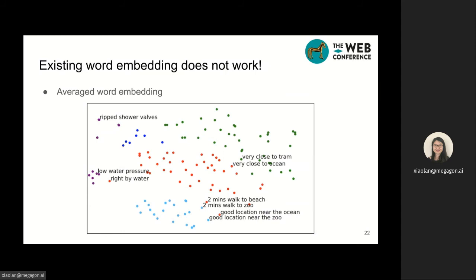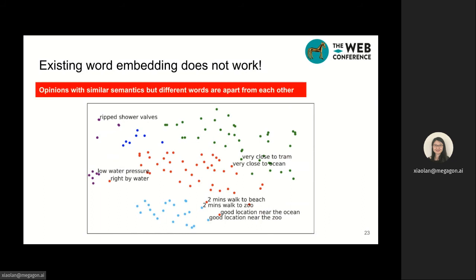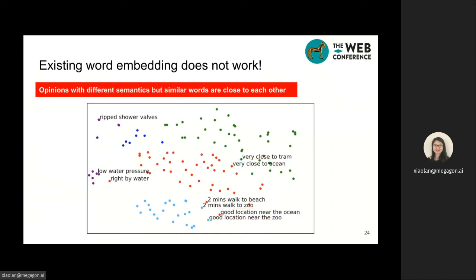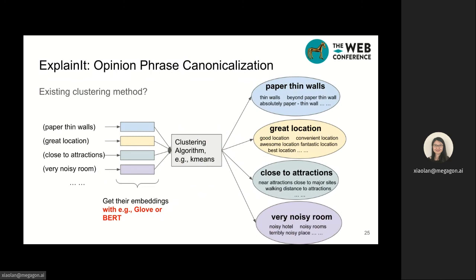However, this approach may not be ideal. Here we visualize the average word embeddings of opinions in two-dimensional space. Opinions of similar semantics but different words are quite far apart from each other. For example, three highlighted opinions talk about the same thing but are quite apart in embedding space. Meanwhile, opinions of different semantics but similar words are close to each other — for example, very close to tram and very close to the ocean, or two-minute walk to beach and two-minute walk to zoo. The main issue is that average word embeddings are not optimized by the labels acquired from previous steps.